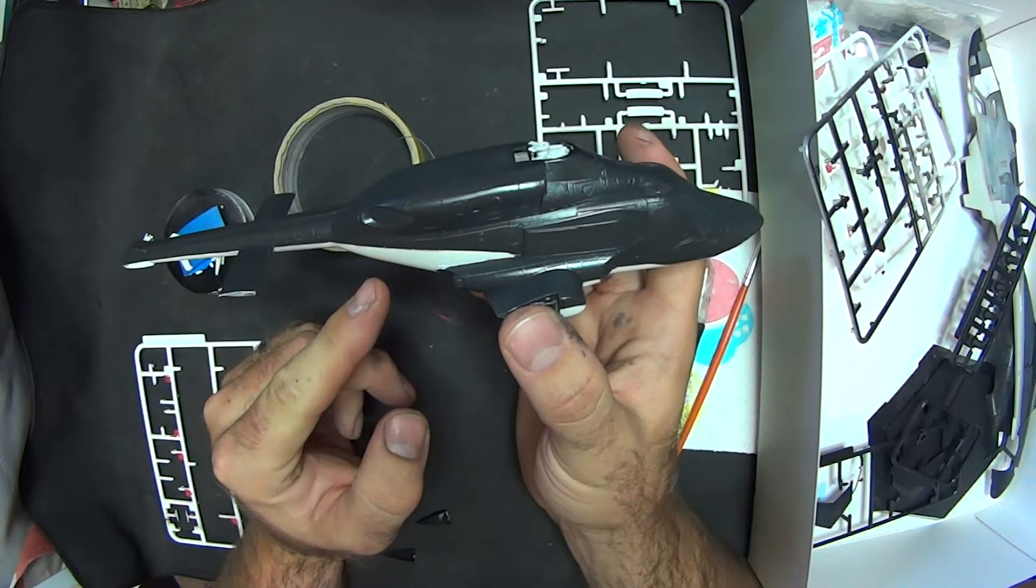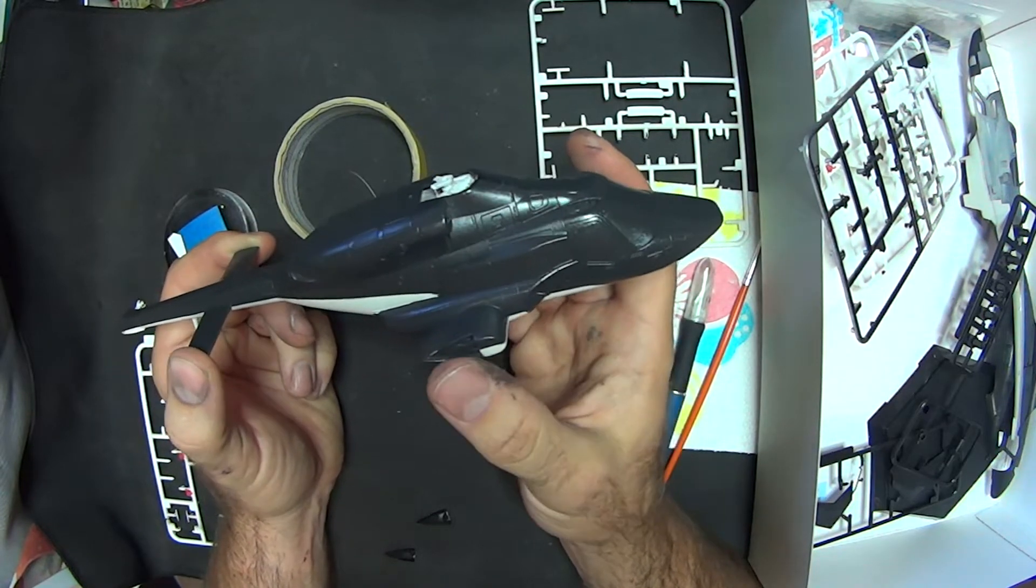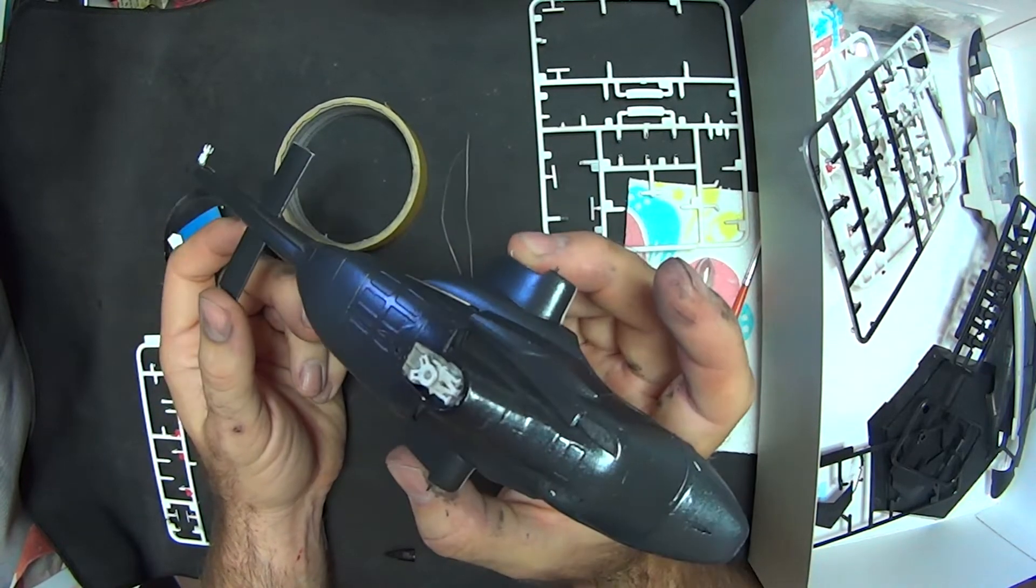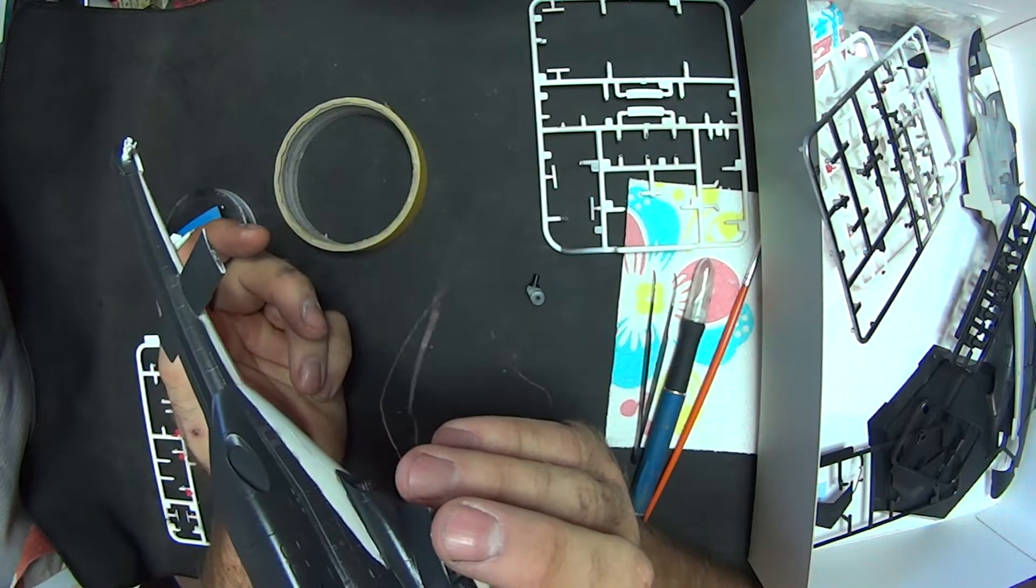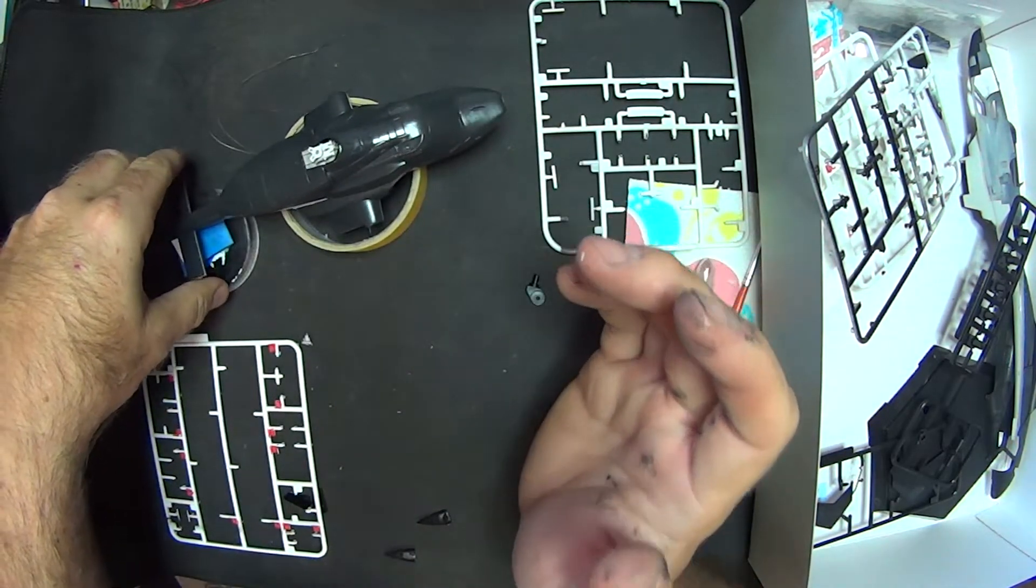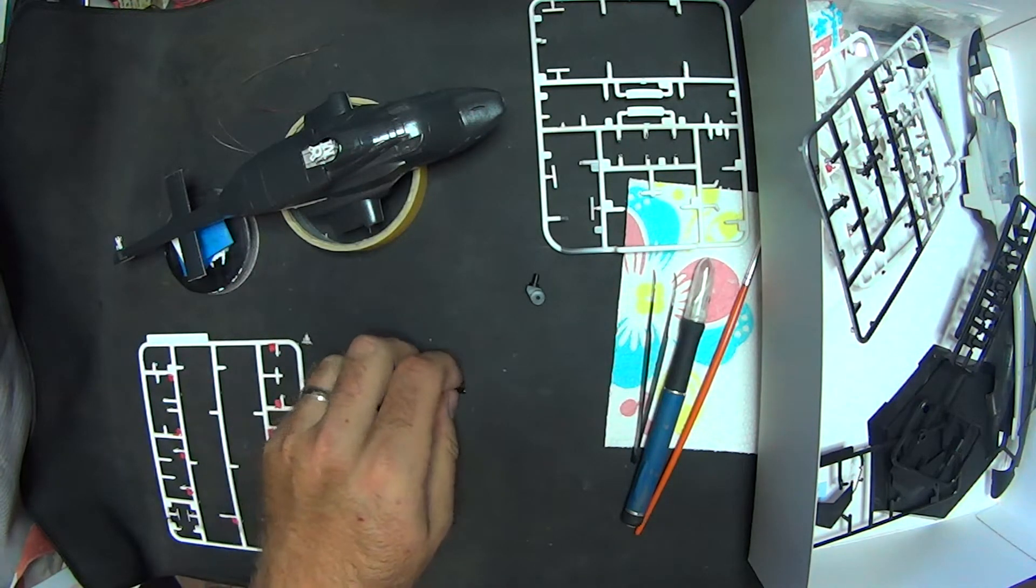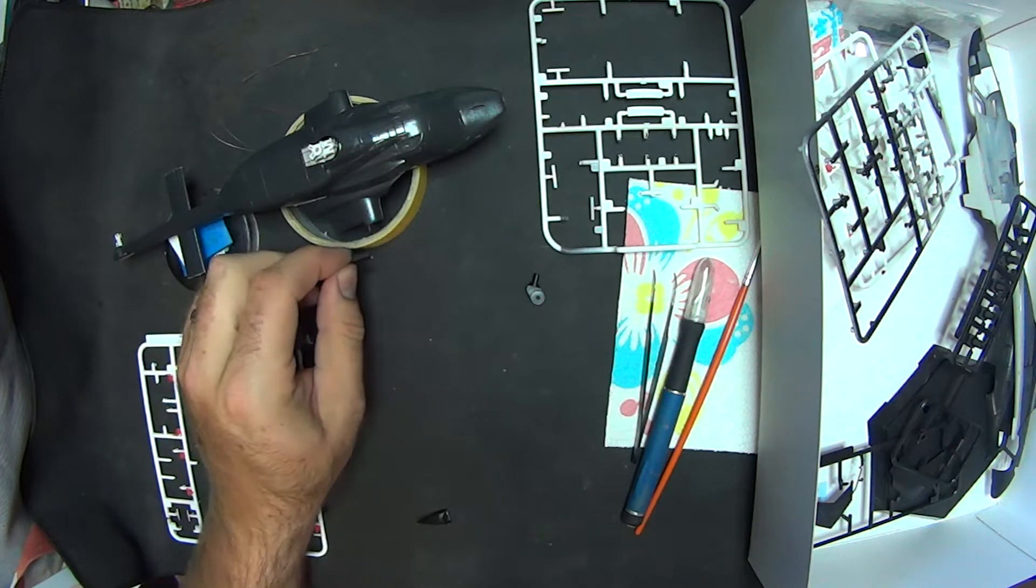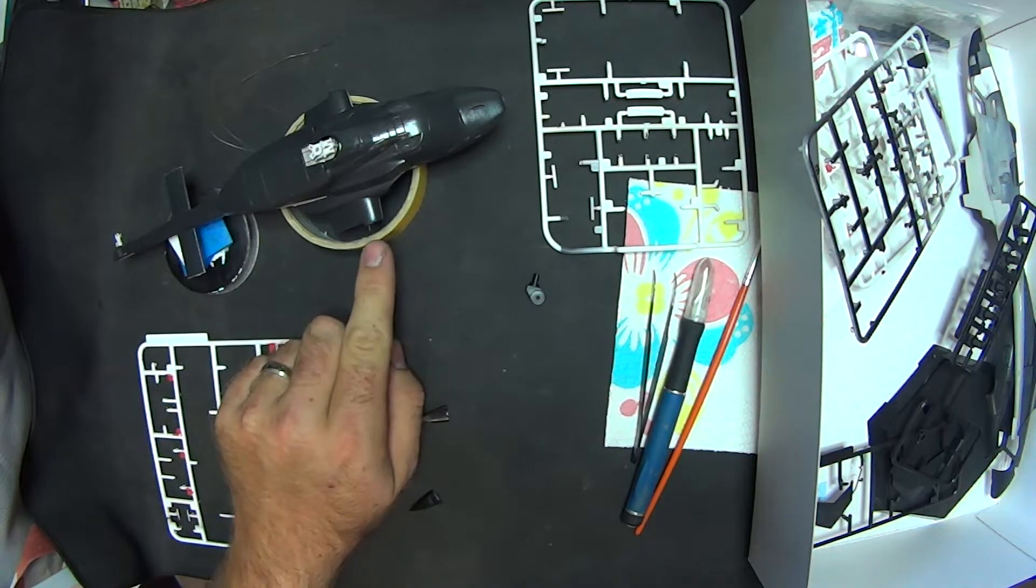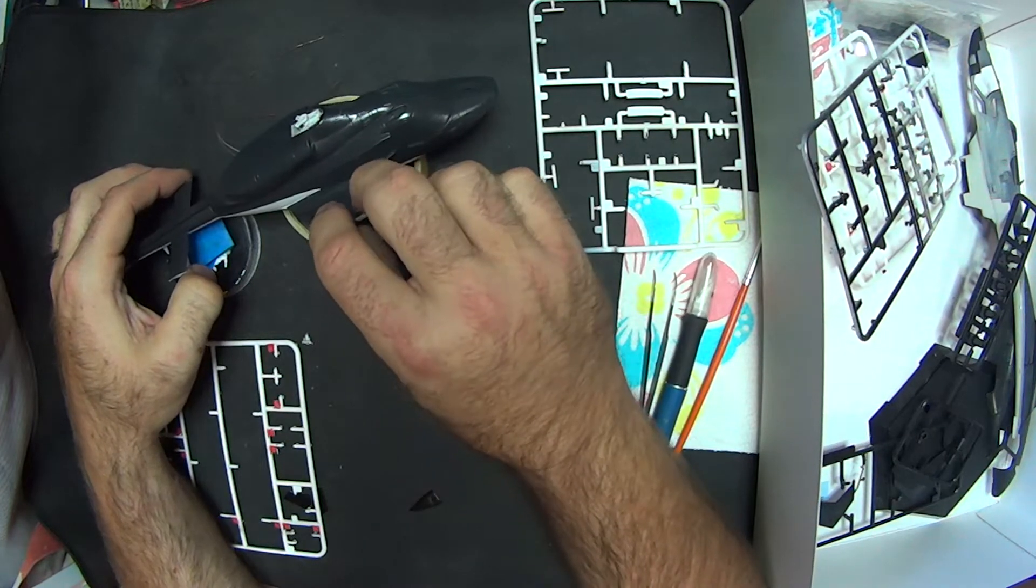Once I got those masked off, I came in and sprayed on my Anthracite Gray. I had to come back and do a little bit of touch-up. There's a couple spots where I got some overspray on the white. When I thought it looked good, I came over this with a coat of the Tamiya Pearl Clear.